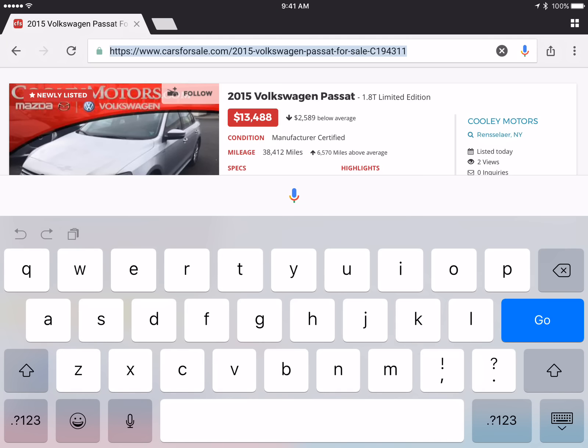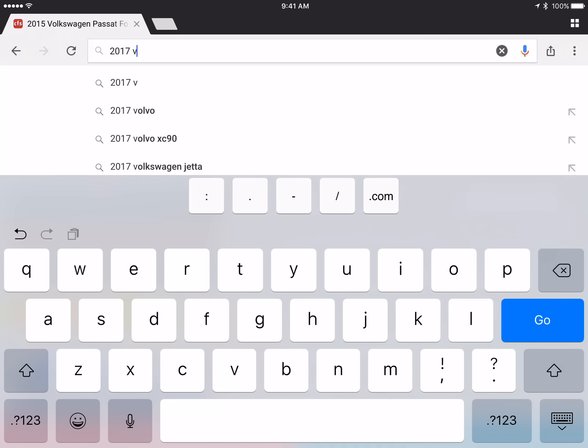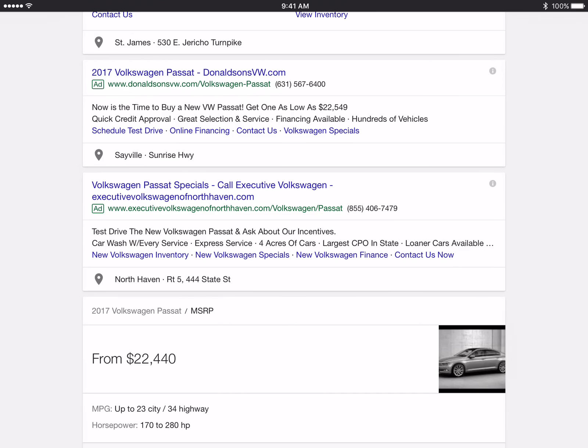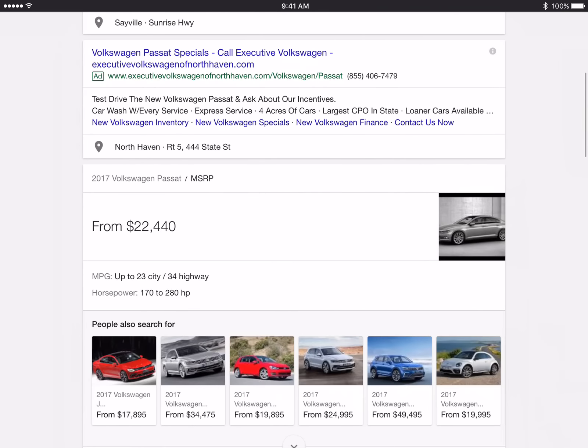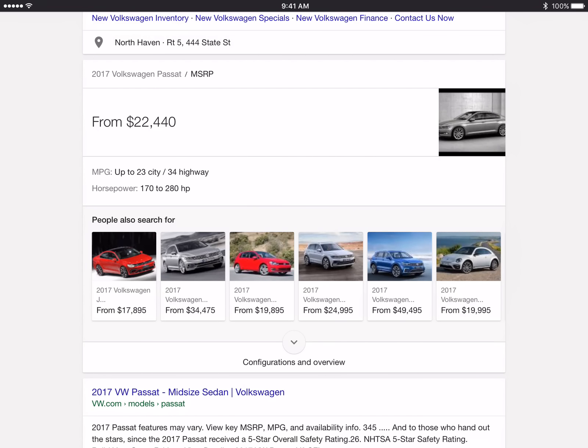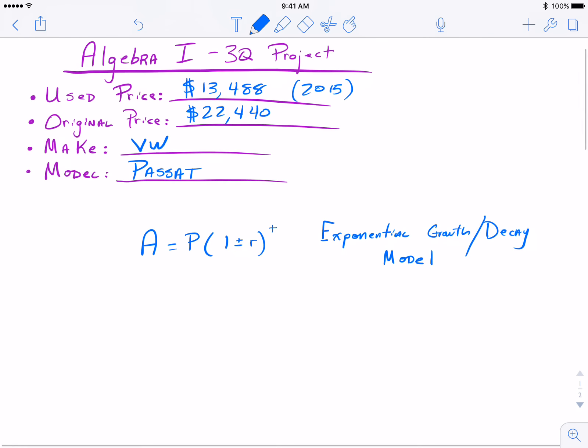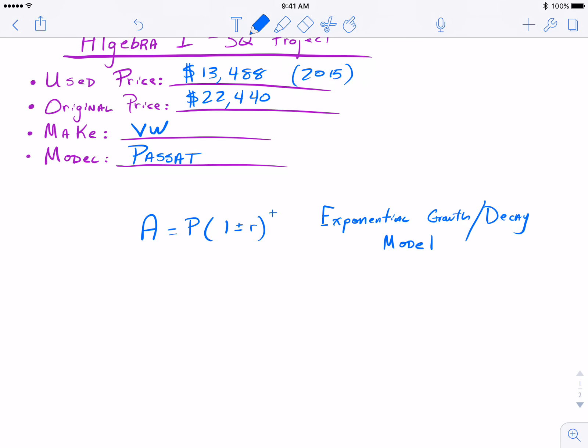I'm literally just going to Google 2017 Volkswagen Passat MSRP. You could use other websites like Kelly Blue Book or you just Google different phrases, but MSRP usually gives you a pretty good idea of what this car should be. So you can see it should be around, without any souped-up model or anything like that, a basic Volkswagen Passat should be around $22,440.